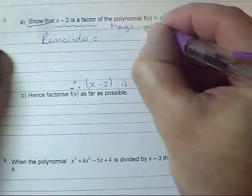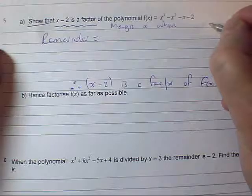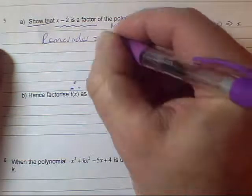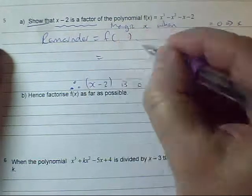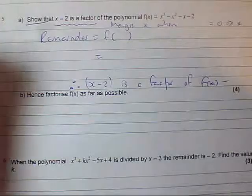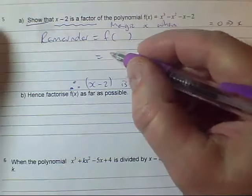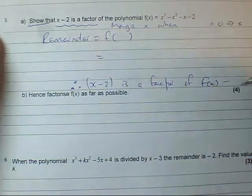The magic x is when the divisor that you're interested in equals zero, and that leads to the x value that you're going to substitute into your f of x. The answer when you substitute it in is the remainder. If you want it to be a factor, you're hoping the remainder will be naught. So as soon as you get an answer of naught convincingly, then you can draw the conclusion.